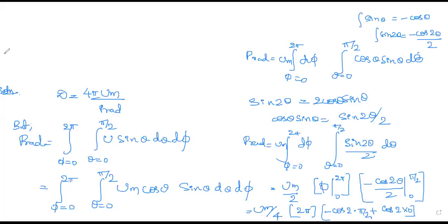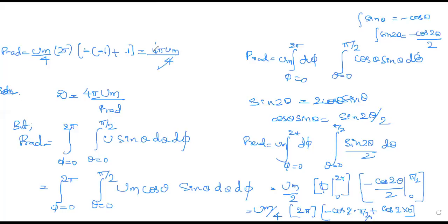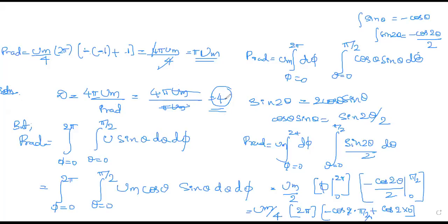The power radiated is Um/4 times 2π. The 2 and 2 cancel, giving −cosπ. cos π = −1, so minus into minus is +1. Plus cos0 = 1. So 1 + 1 = 2, giving 4πUm/4. The 4s cancel, leaving power radiated = πUm. Substituting into the directivity formula: D = 4πUm / πUm = 4. For the bidirectional cosine pattern, the directivity is half, which is 2.